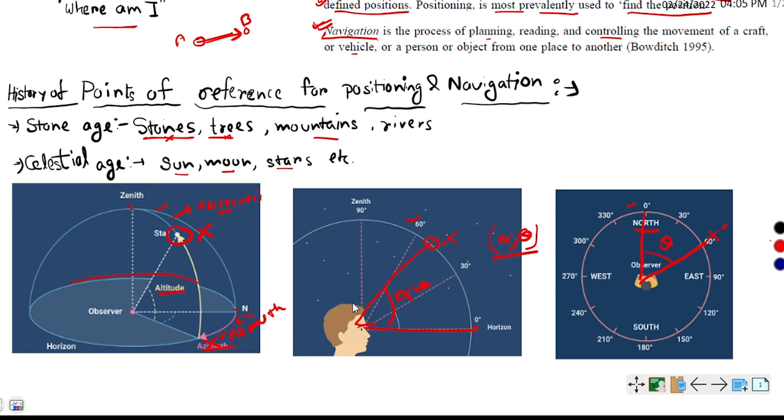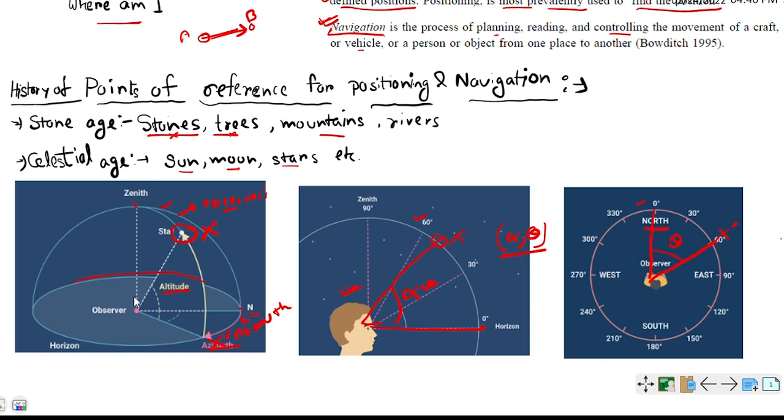Now, if the observer changes his position to somewhere here, then based on that the horizon will change, and this angle alpha and theta will also change. Alpha means altitude and theta means the azimuth, and that's how the position can be determined in the Celestial Age.